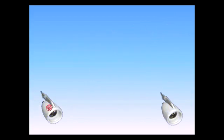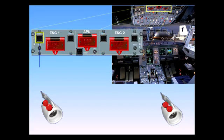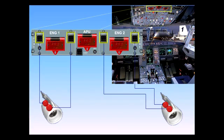Each engine is equipped with two fire bottles. The discharge of the bottles is controlled by associated push-button switches located on the fire panel on the overhead panel.